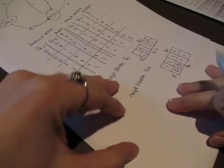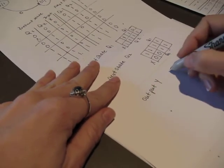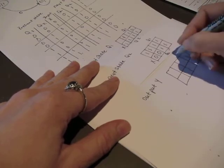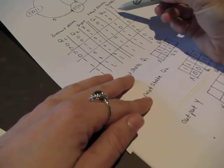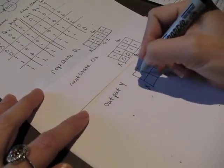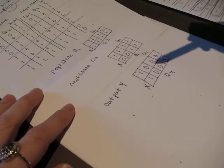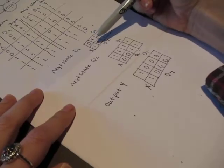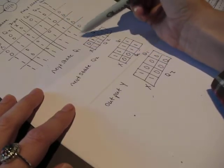Next we'll do our output Y. Y is a function of Q1, Q2, and X. Y is pretty simple because there are only two places where Y equals 1, so those are the only entries that will have a 1. As a quick check, I'm just verifying that I have the same number of 1s in the K-map as in the column — six, six — just making sure I did these right.